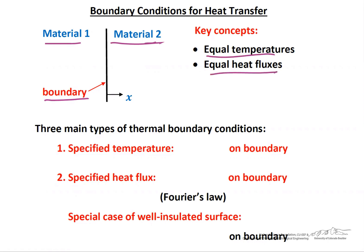It's important to understand that if the temperatures were not equal — say the temperature of material one was higher than material two — and that boundary was very thin, then there'd be essentially an infinitely large temperature gradient across the boundary, and therefore a very, very large heat flux.